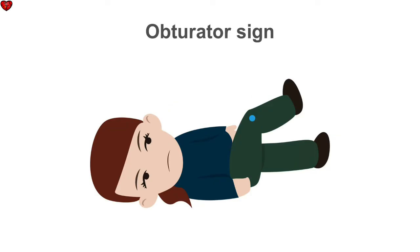The technique for detecting the obturator sign, called the obturator test, is carried out on each leg in succession. The patient lies on his or her back with the hip and knee both flexed at 90 degrees. The examiner holds the patient's ankle with one hand and knee with the other hand, then internally rotates the hip by moving the patient's ankle away from the patient's body while allowing the knee to move only inward. When acute appendicitis is suspected, the inflamed and enlarged appendix may come into physical contact with the obturator internus muscle, which will be stretched when this maneuver is performed on the right leg, causing pain and supporting the diagnosis of an inflamed appendix.